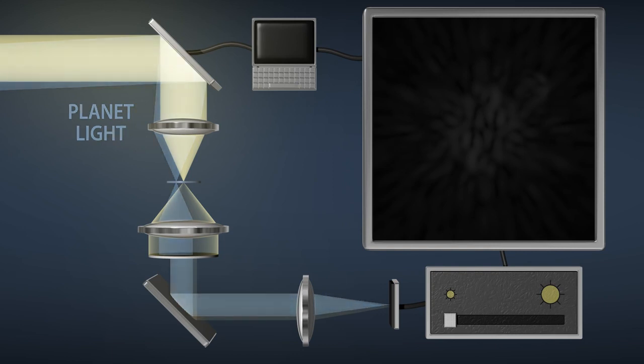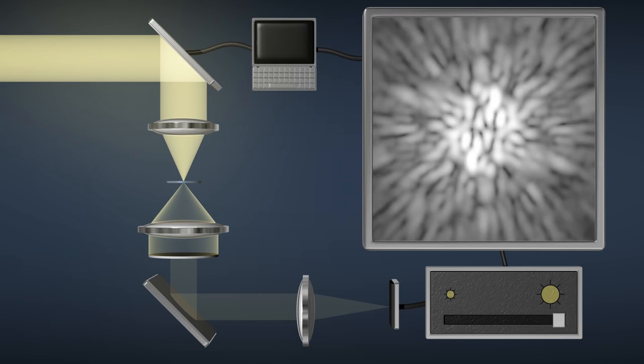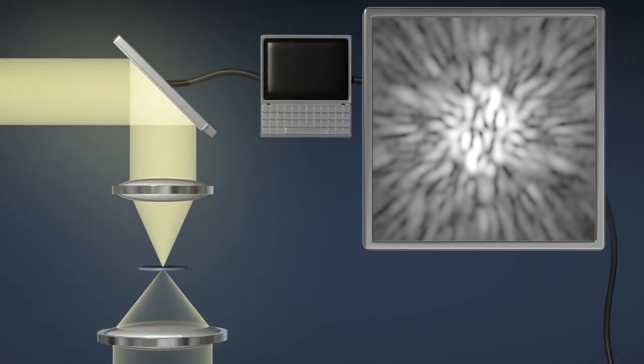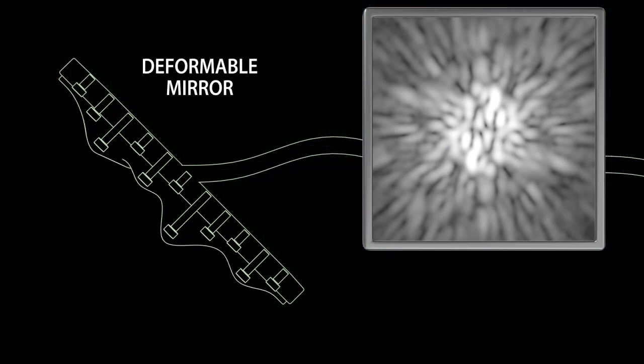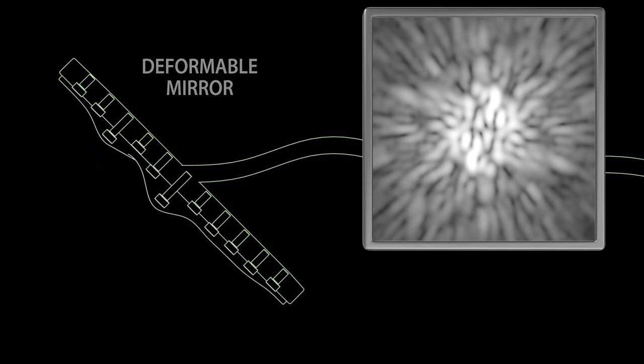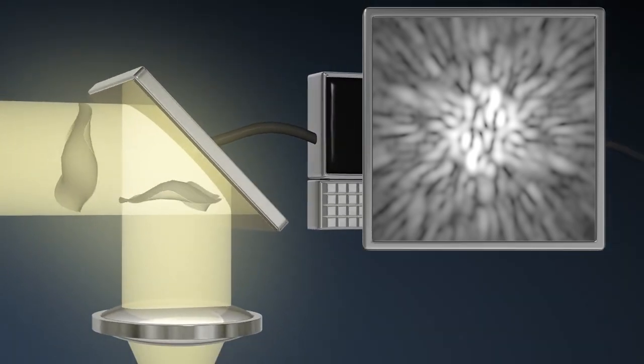But when we turn up the image signal by collecting more light, we can see that the planets are still hidden under blobs of leftover starlight. To remove these blobs, the coronagraph has a special deformable mirror that can change shape by using hundreds of tiny pistons. This can correct distortions in the light beam.